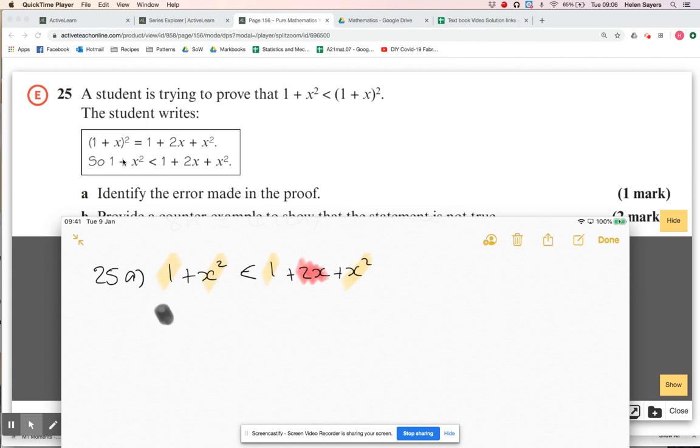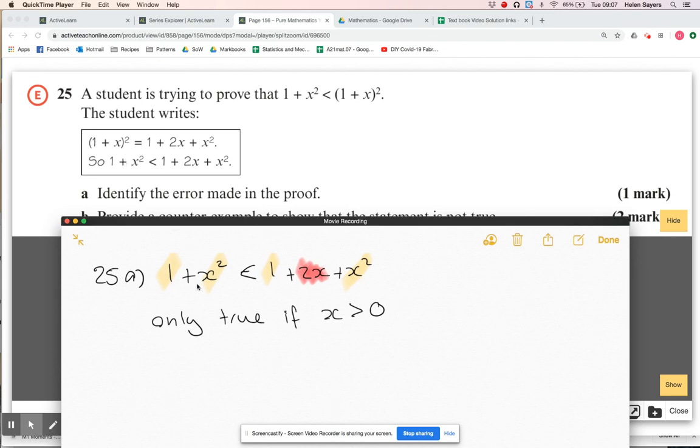That is only true if x is positive. If x equals zero, then the left hand side and the right hand side are the same. If x is negative, then the right hand side is actually less than the left hand side. So it's only true if x is greater than zero.